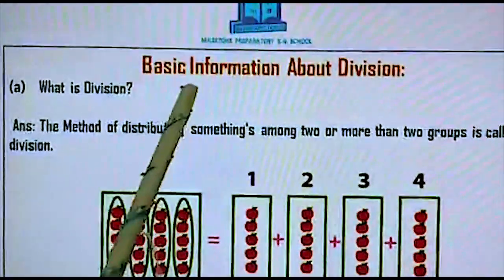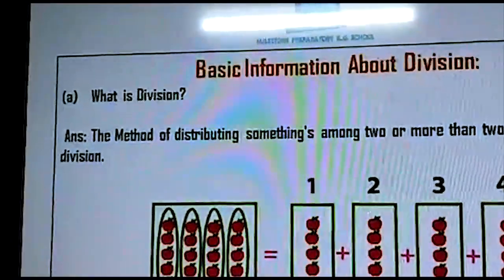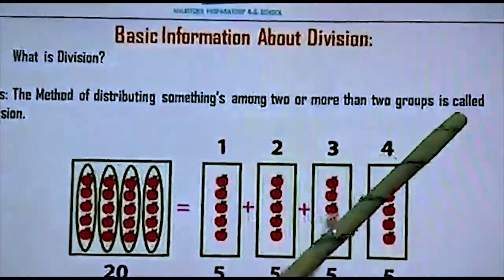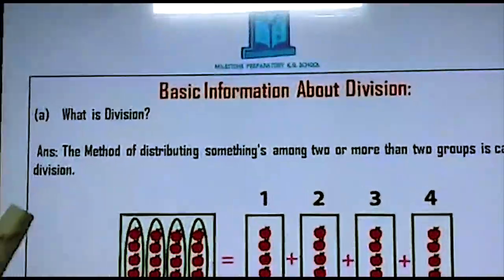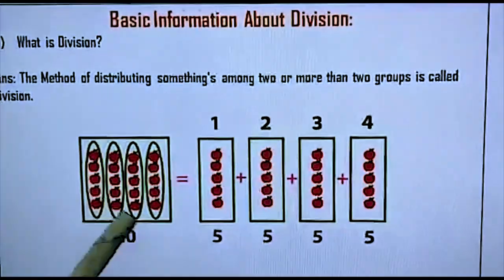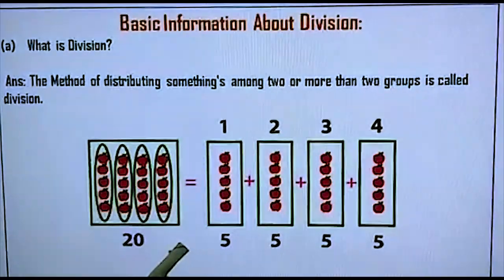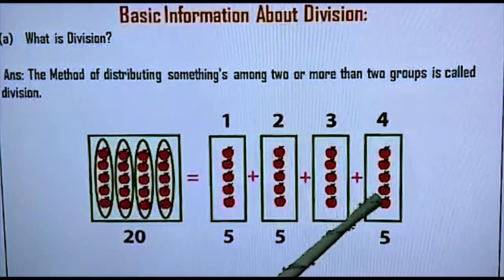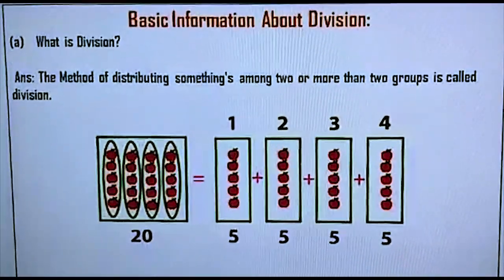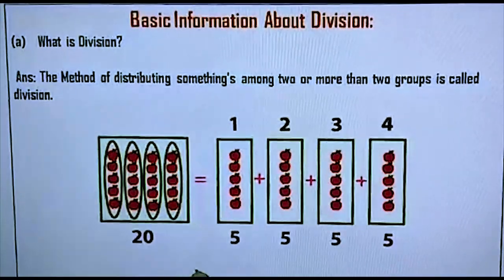Now I am sharing the basic information about division. What is division? Division means the method of distributing some things among two or more than two groups is called division. We have to distribute something among two persons or two or more than two groups. Look at the picture here. There is a total of 20 apples and there are four groups. I want to distribute these 20 apples among the four groups. So which method do we have to use here? We have to use the division method here, because division means to distribute.